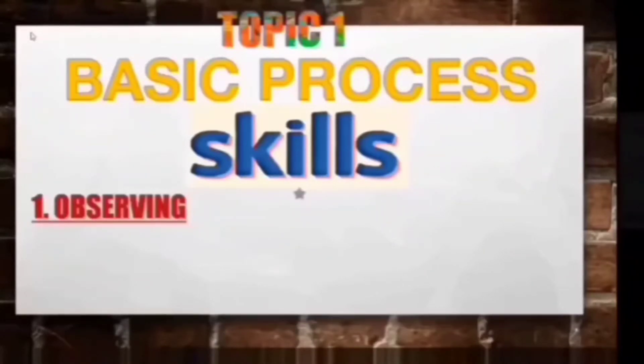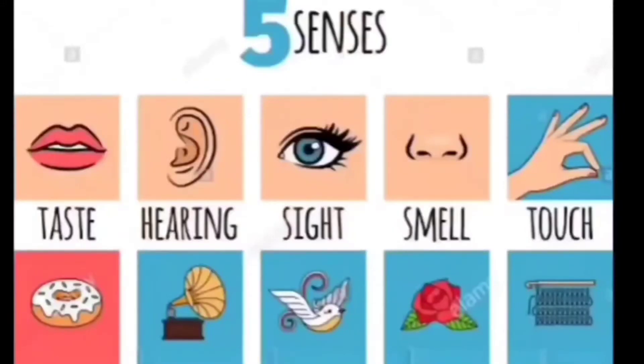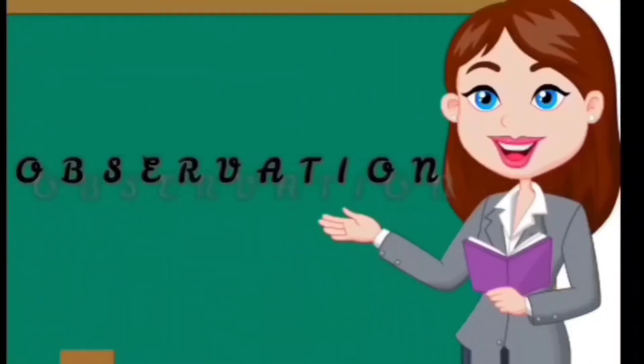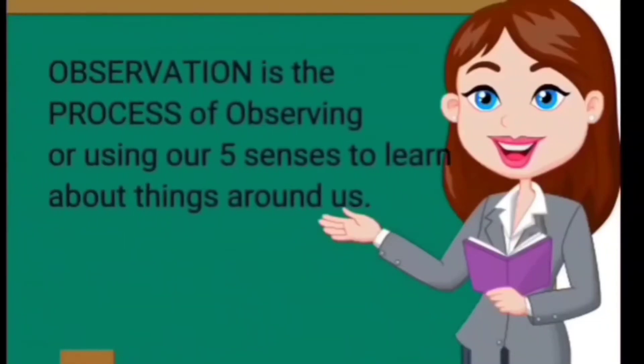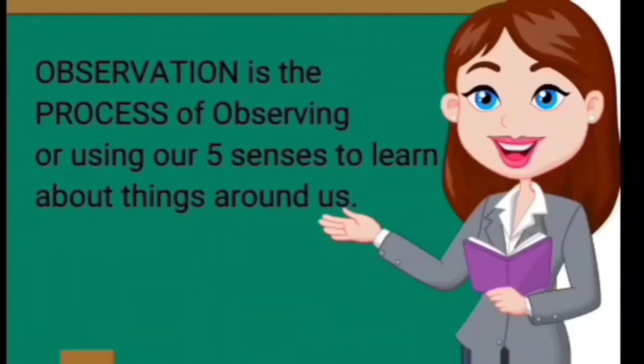Did you get all the answers correct? If not, replay this video and review the lesson, or ask your teacher for further explanation. If yes, you can then proceed to the next topic. We have learned that observing is the skill of getting information with the use of our five senses: sight, hearing, smell, touch, and taste. Now we will be discussing the word observation. Observation is the process of using our senses to learn about objects around us.